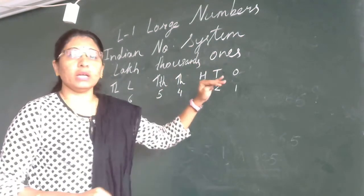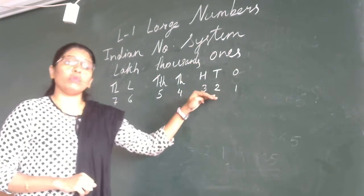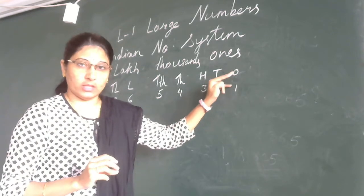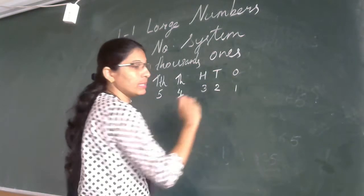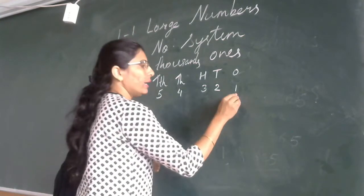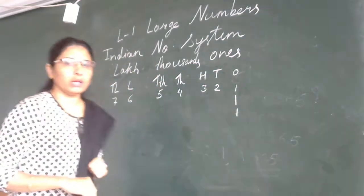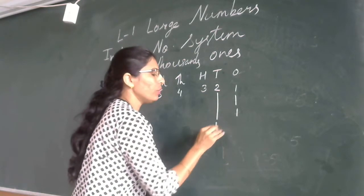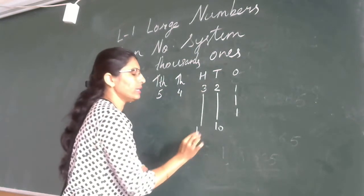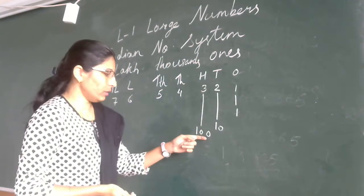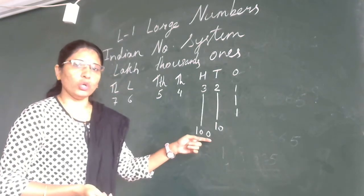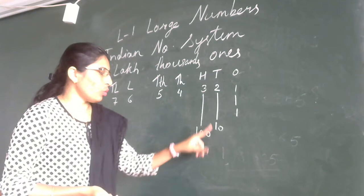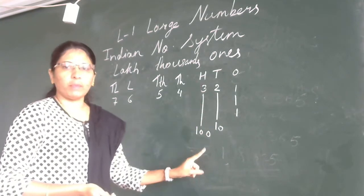This is the Indian number system — period, place, and place value. Now we will see place value: what is the value of that place. In the ones period, the ones place has a place value of one. Tens place has two digits, so its place value is ten. Hundreds place has three digits, so its place value is one hundred — that is, one followed by two zeros.